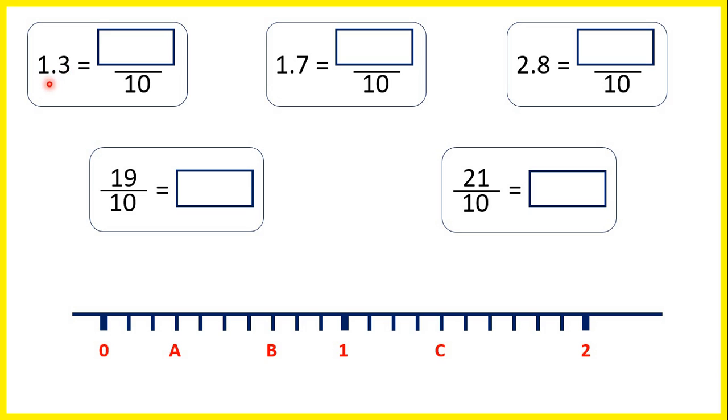So 1.3 is 1 and 3 tenths, but we can change our 1 whole into tenths. Remember, 1 whole is the same as 10 tenths. So if we have 10 tenths and then have another 3 tenths, we have 13 tenths altogether.